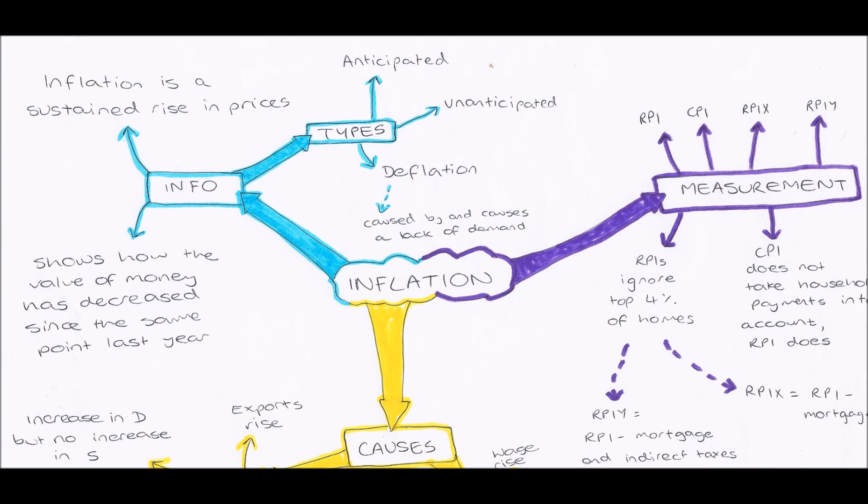Then what they will do is they will compare this average price of bread to the average price of bread at the same time last year, and they will then work out the percentage change between those two numbers. So the percentage change between the average price of bread this year and the average price of bread last year.